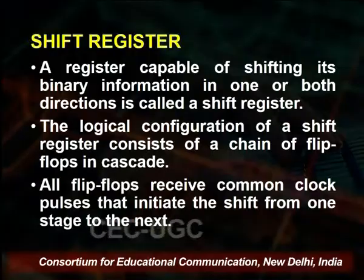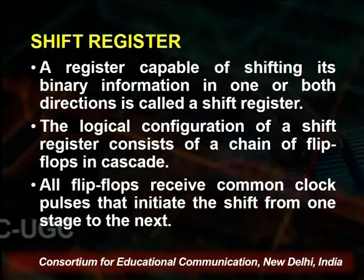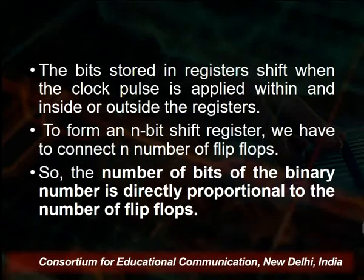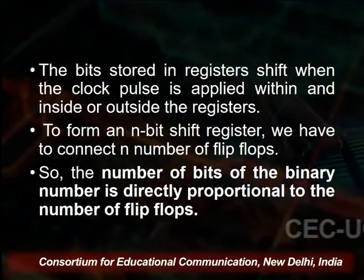The logical configuration of a shift register consists of a chain of flip-flops in cascade, so the value of one flip-flop can move on to the next. Each flip-flop holds one value; whenever there is a shift, that value moves to the next flip-flop in line. All flip-flops receive a common clock pulse that initiates the shift from one stage to the next — it is the clock pulse that causes each flip-flop to transfer its content to the next one.